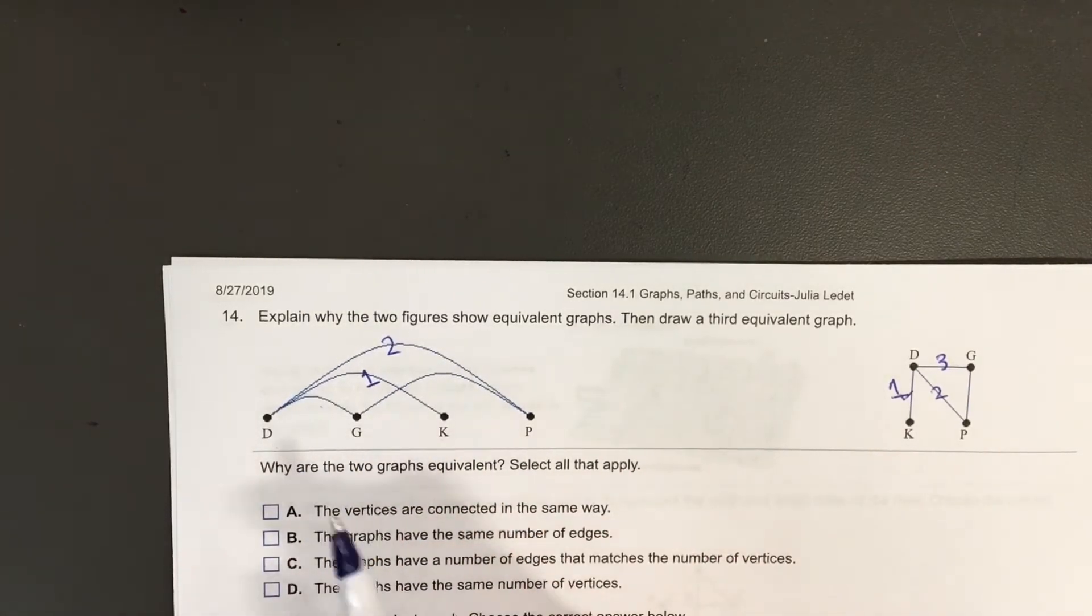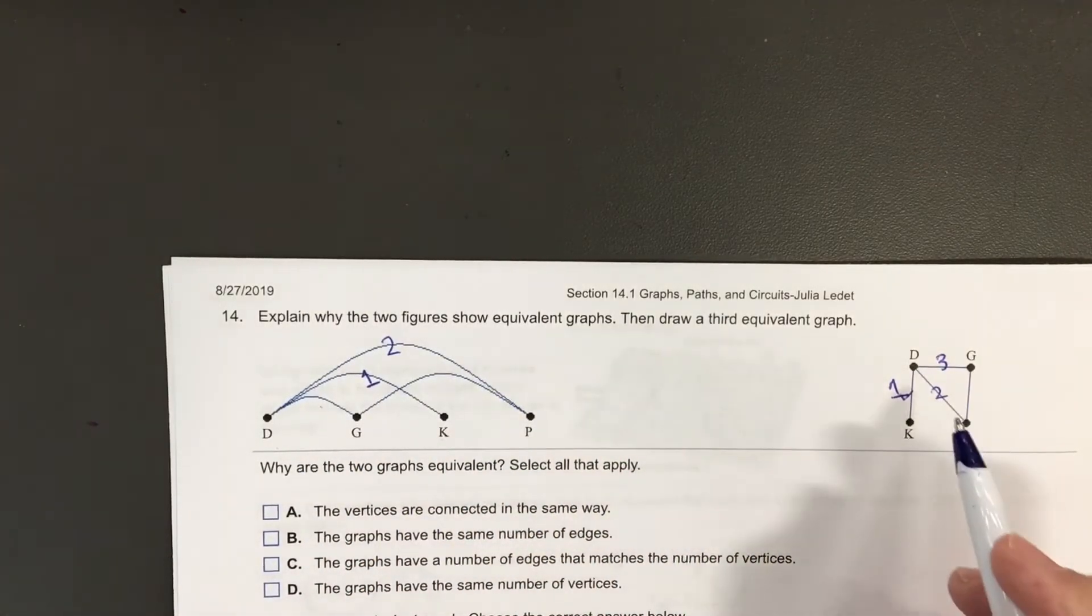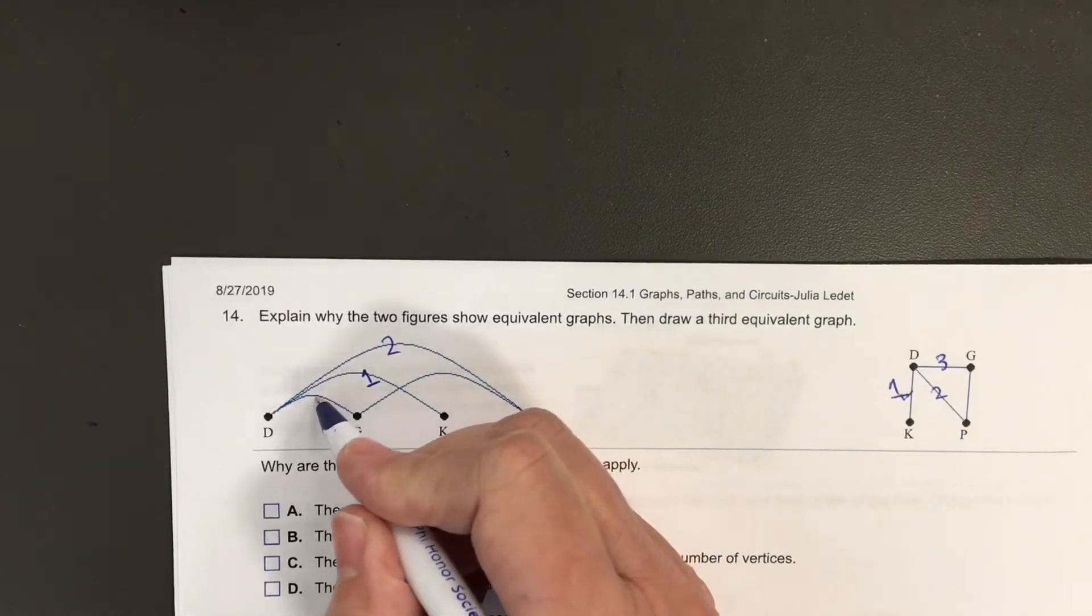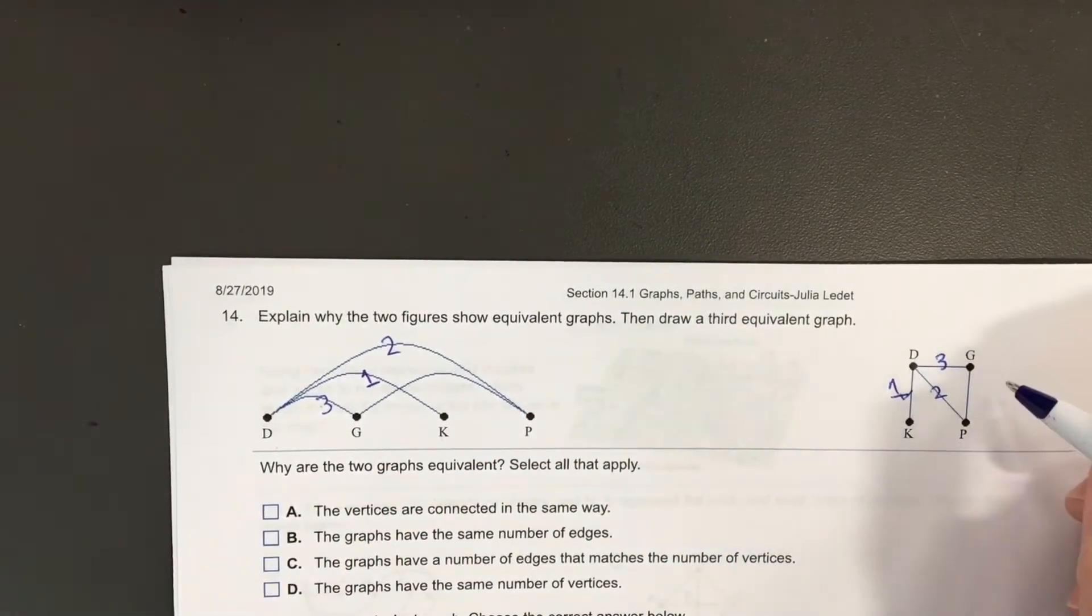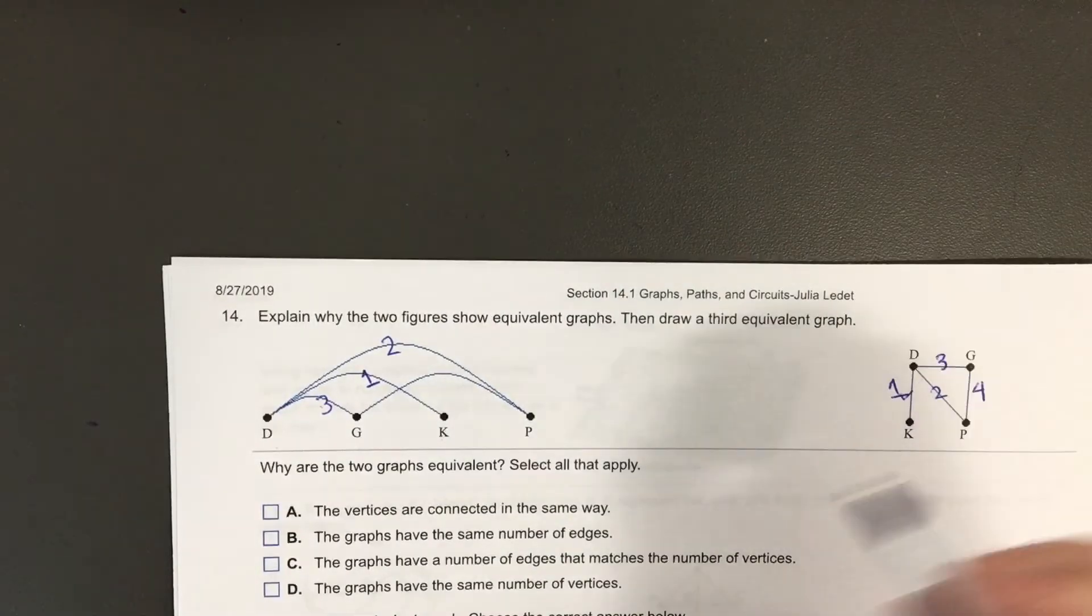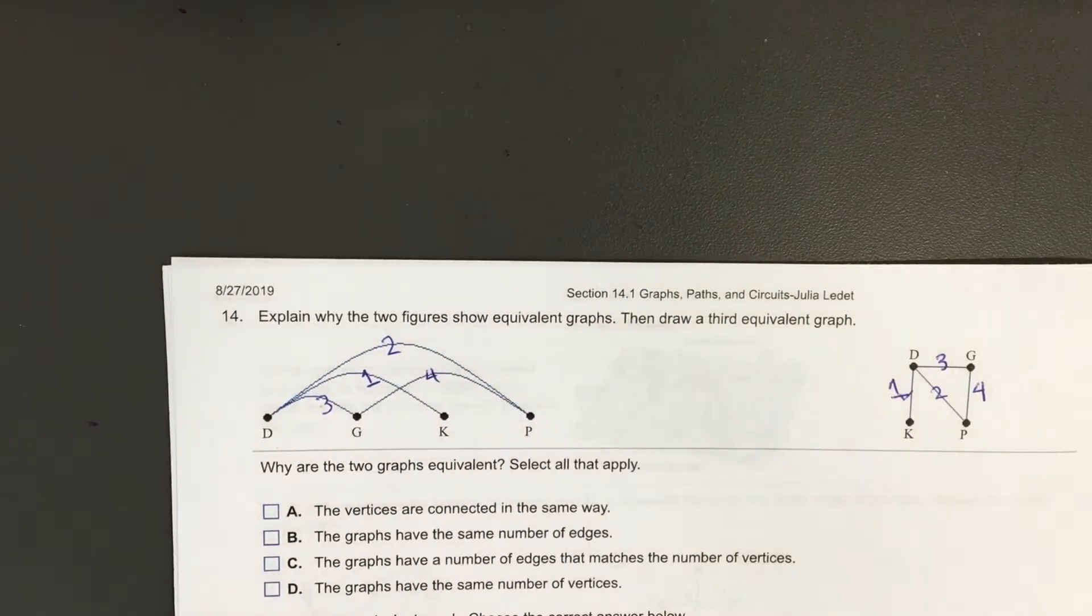Oh, I said it wrong. D to G. D to G is edge number three. And then the fourth edge, G to P, we have that one. And that takes care of all the edges in both graphs. So they're equivalent.